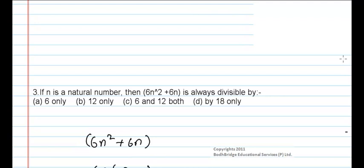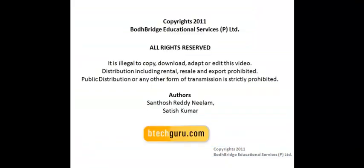So the question asked is, if n is a natural number, then 6n² + 6n is always divisible by what? It is always divisible with only 6 and 12 both, but not with 18. Only in some cases it is divisible with 18. So option C is correct. Thank you.